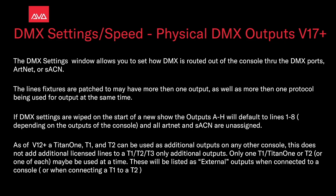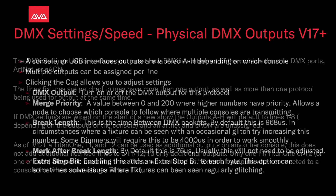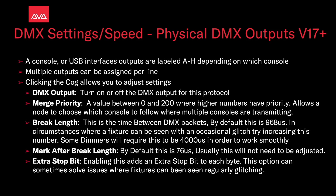As of version 12, a Titan 1, T1, and T2 can be used as additional outputs for any other console. This does not add additional licensed lines to a T1, T2, or T3 — only additional outputs. Only one T1 or T2, or one of each, may be used at any one time. These are listed as external outputs when connected to a console or when connecting a T1 to a T2. The console or USB interface outputs are labeled A through H.